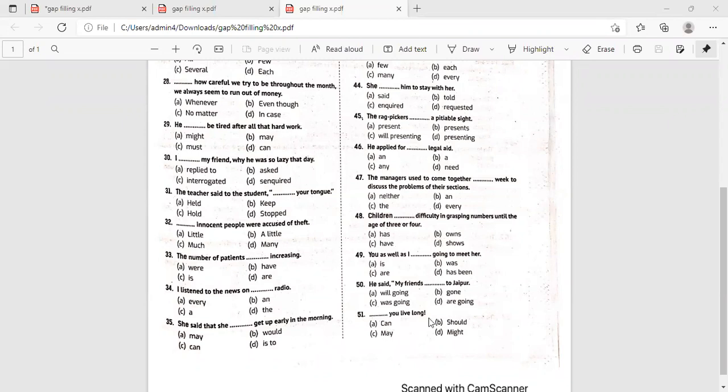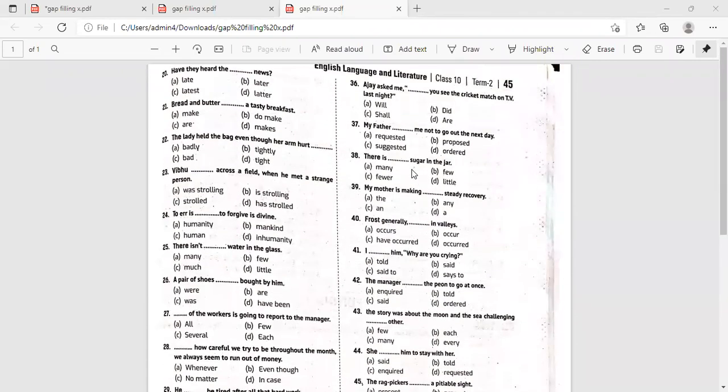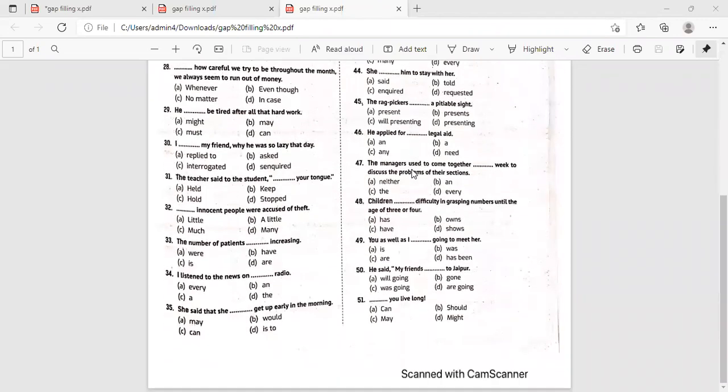Dash you live long. This is once again what do you call this, a kind of optative. Can you live long, may you live long, should you live long, might you live long. May you live long? May. Absolutely correct.